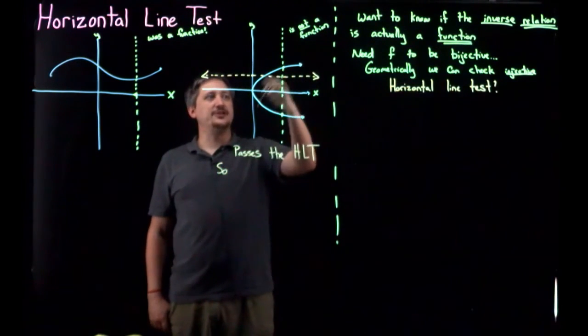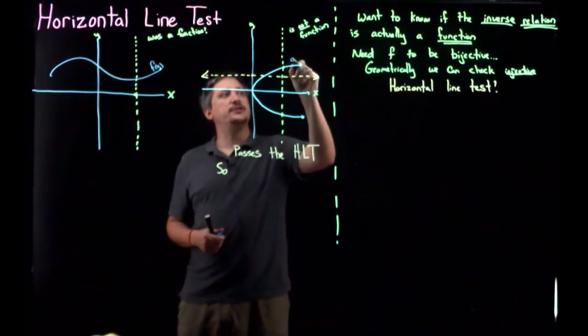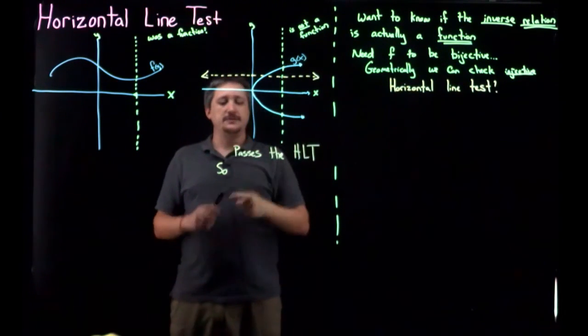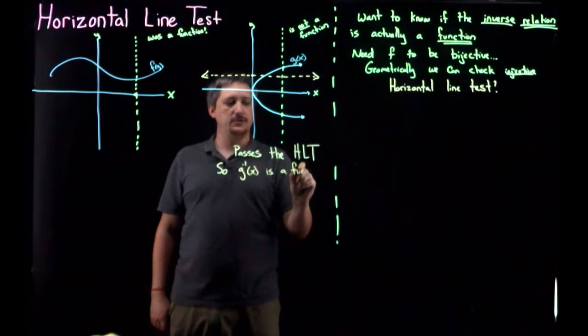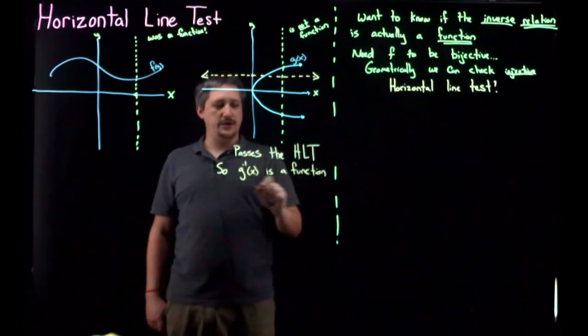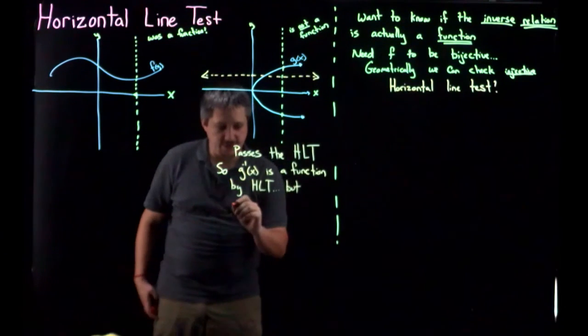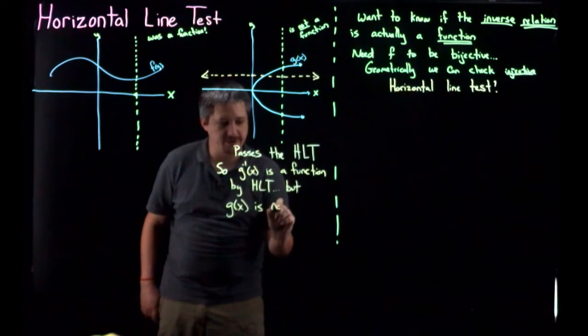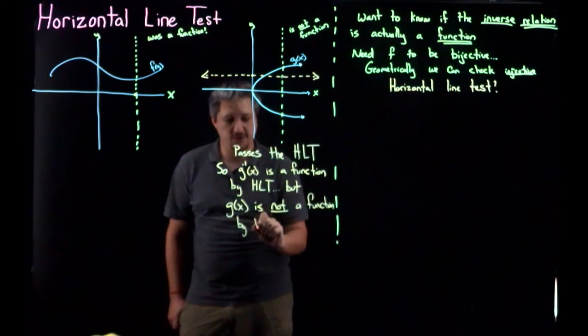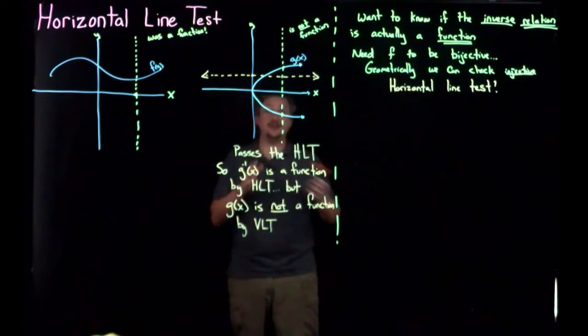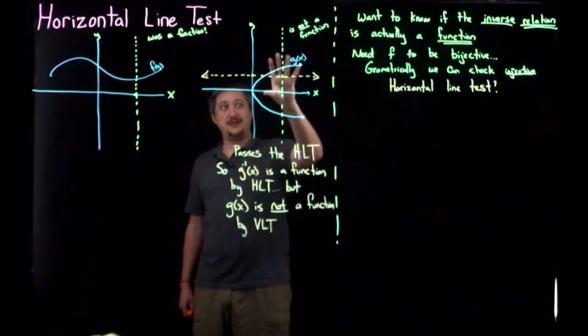So here, in fact, this passes the horizontal line test, which I'm just going to write as HLT, horizontal line test. So let me actually write some names for these things. Let's call this thing f of x and call this thing g of x. So here, g inverse of x is a function by the horizontal line test, but g of x is not a function by the vertical line test. So it is possible to have a relation that is not a function where the inverse is a function. This is a perfect example.